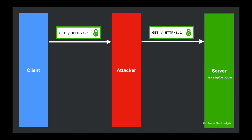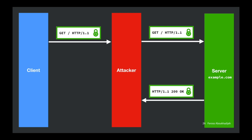The attacker sees the request but can't see the text inside that encrypted box. The attacker has a choice: they could refuse to forward the request, which appears to the user as the site being down. But normally they'll forward it on. The server sends back a response and the attacker can only either forward it or not — it can't modify it. In the normal case it forwards it along and learns nothing.